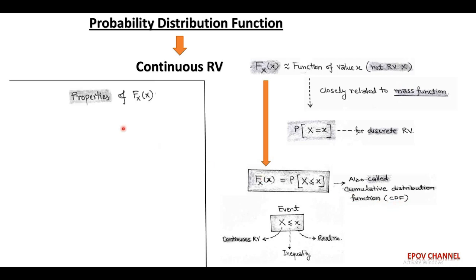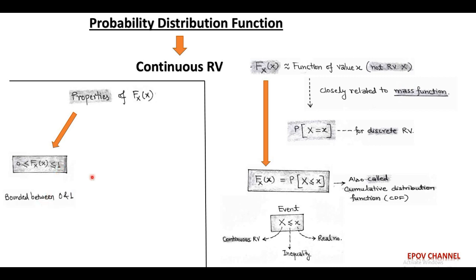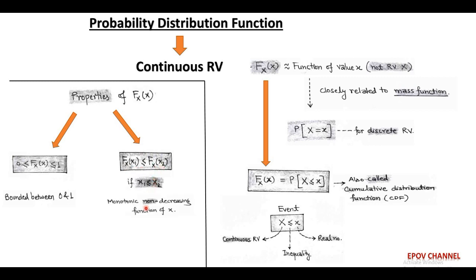Now we talk about the properties of the cumulative distribution function. F(x) is called the cumulative distribution function. The first property is that the probability distribution function is always bounded between 0 and 1 — that is, F(x) is always greater than or equal to 0 but less than or equal to 1. The second property is that the CDF is a monotonic non-decreasing function of small x. That is, if x1 is less than or equal to x2, then F(x2) is always greater than or equal to F(x1).